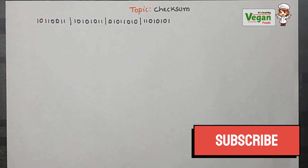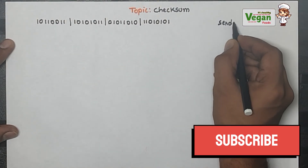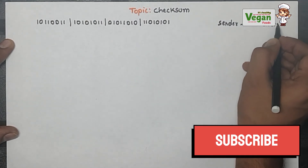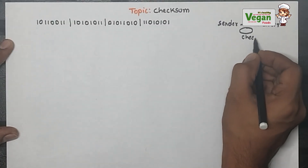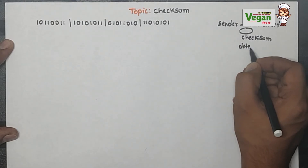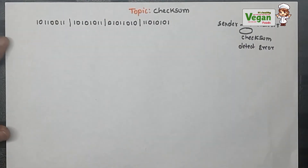Hello everyone. In this video, let's discuss the checksum problem. In the checksum problem, when a sender sends a message to the receiver, at the intermediate stage this checksum will happen. This checksum will detect whether any error is present or not — it detects errors in the message sent from the sender to the receiver.